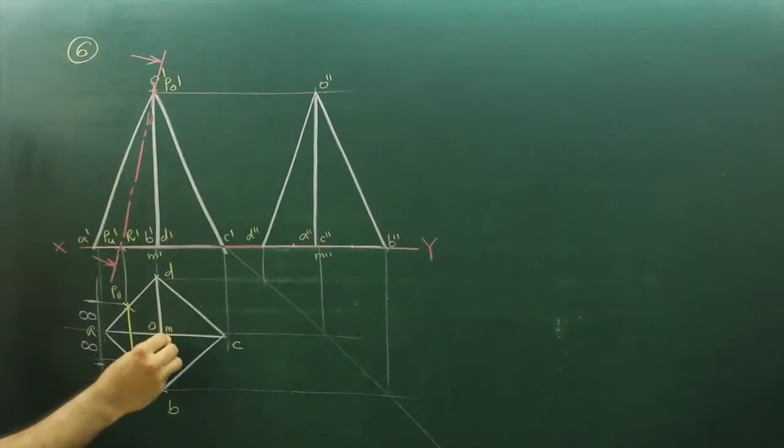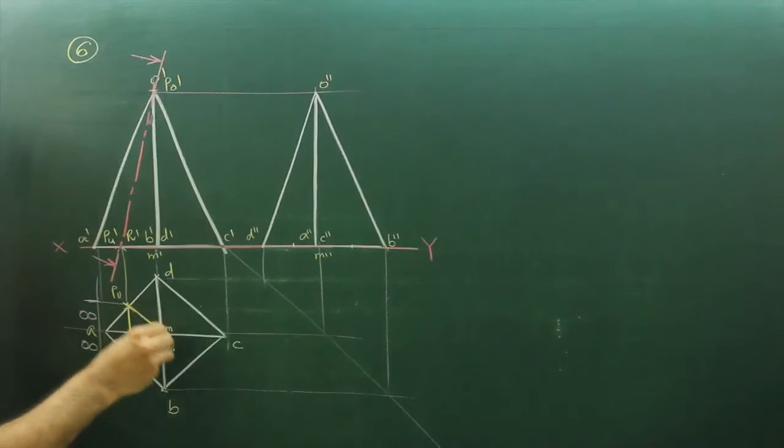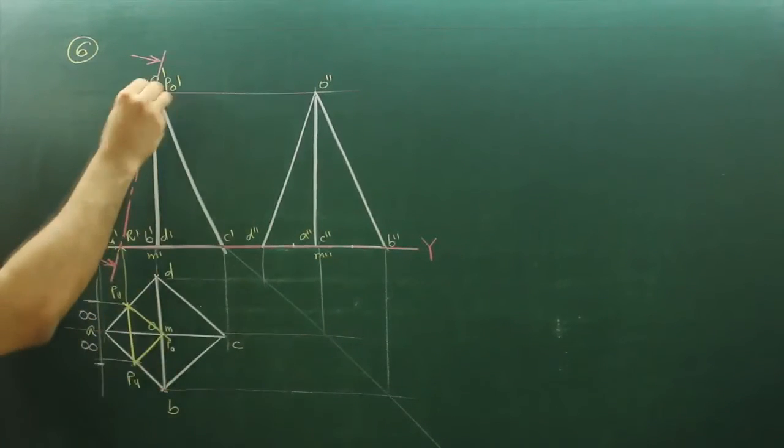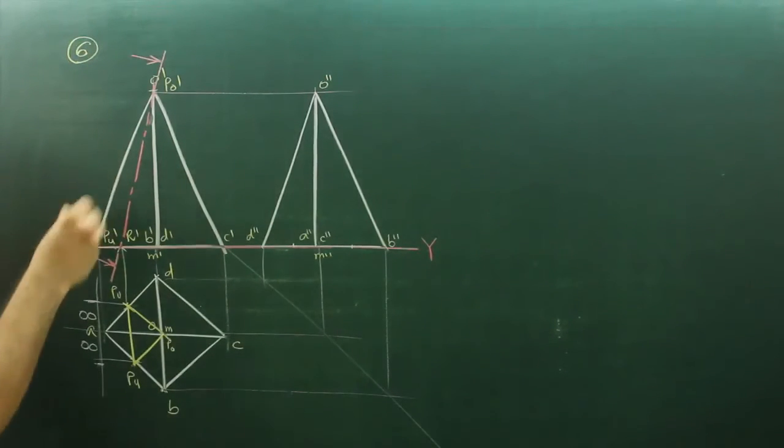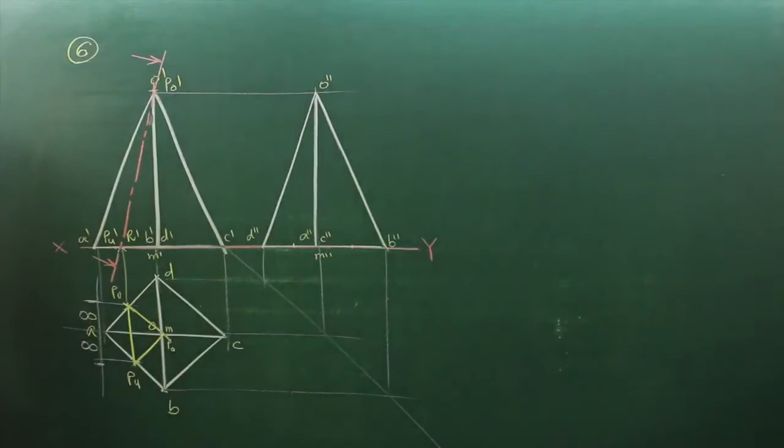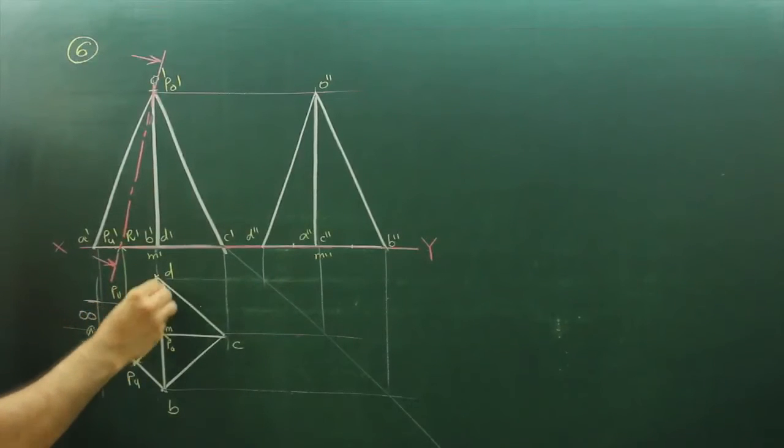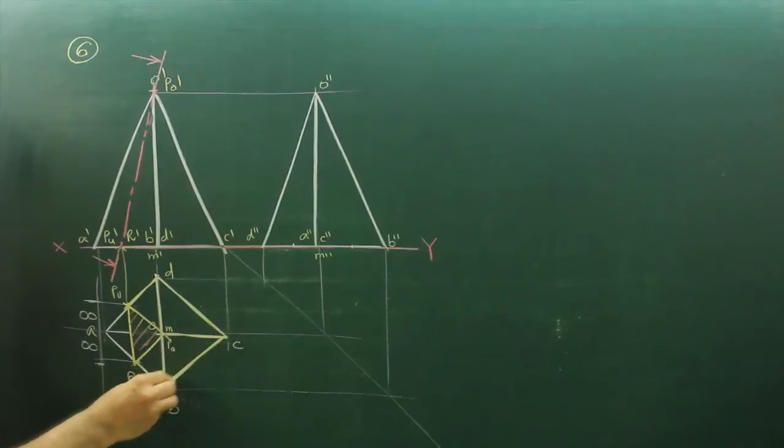Right? So that is point PU is over here. Now we will mark these points in side view as well. This we need to hatch, this much part will be done.